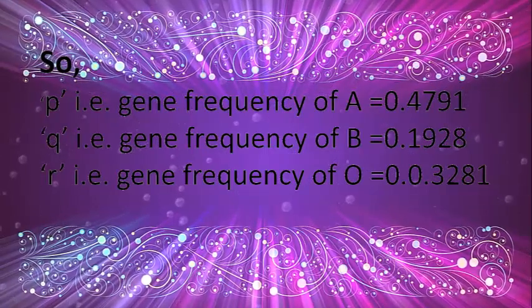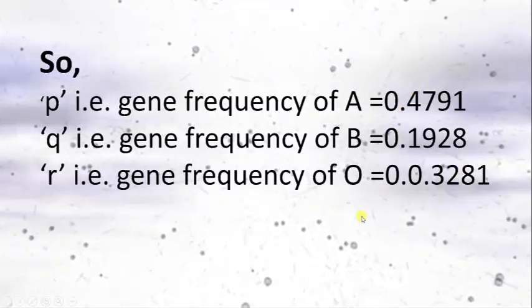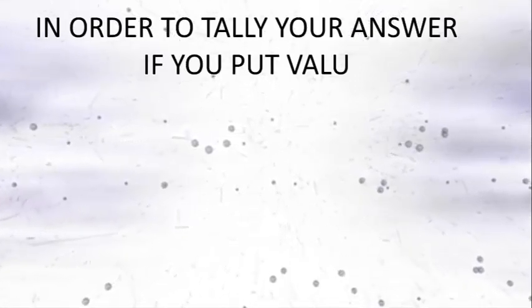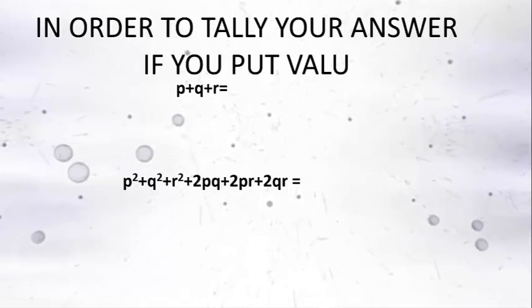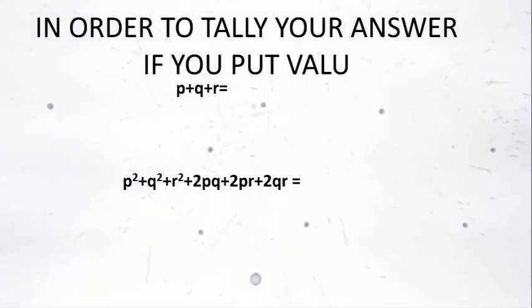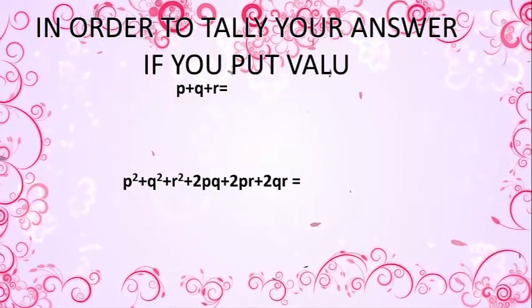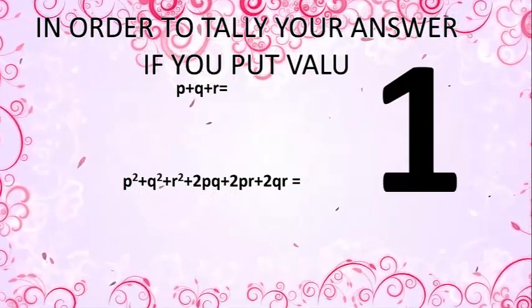So the final gene frequencies are: small p equals 0.2676 (gene frequency of I-A), small q equals 0.1928 (gene frequency of I-B), and small r equals 0.4791 (gene frequency of I-O). As a verification, putting these values into p plus q plus r and into the expanded genotypic frequency formula — p-squared plus q-squared plus r-squared plus 2pq plus 2pr plus 2qr — the sum should always equal 1, consistent with Hardy-Weinberg equilibrium.